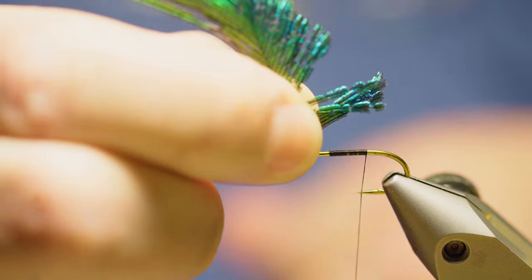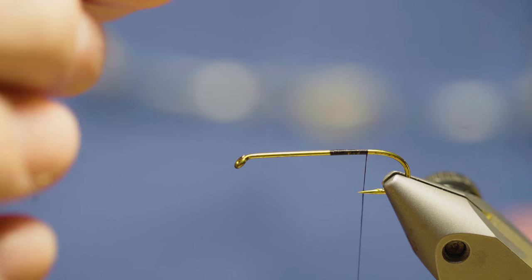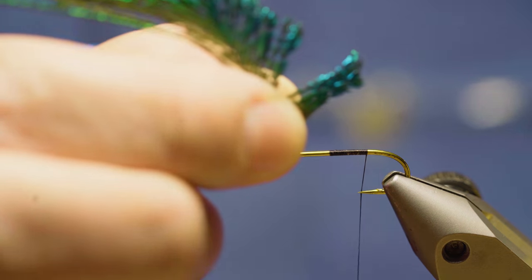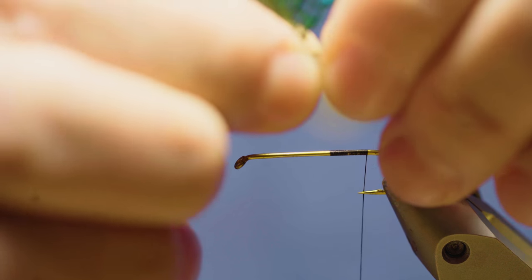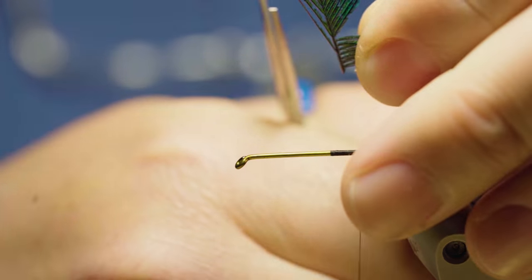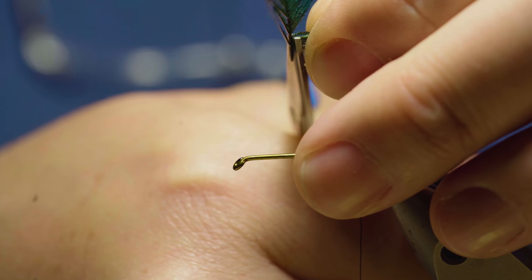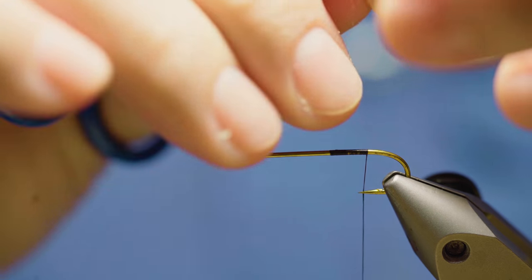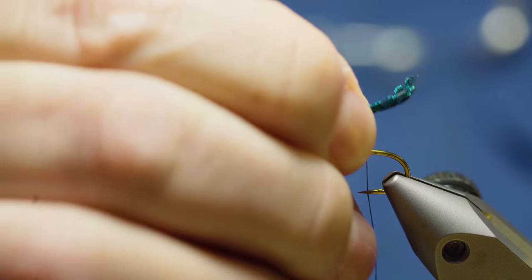So I've got some peacock sword here. This is just a tip or a piece of it. I'm just going to pinch these fibers and trim them off of the stem. There's probably a half a dozen there and I'm going to set it so they curl up.